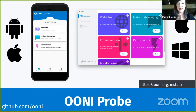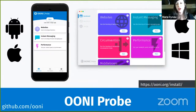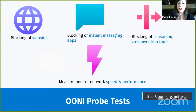OONI Probe is available on mobile for Android and iOS, and on desktop you can install it on Windows and macOS. We also have a command line tool for Linux. When you run the OONI Probe app, you are running different types of tests depending on the network you are connected to — you are testing that specific network.